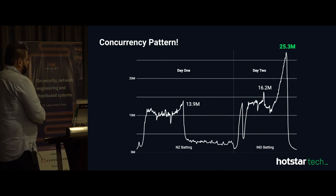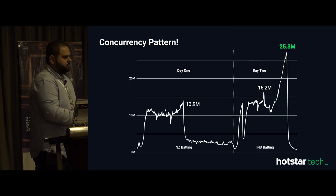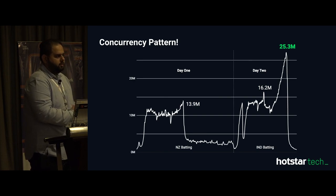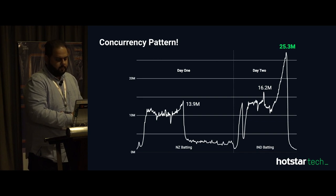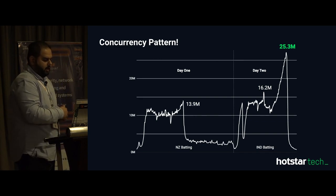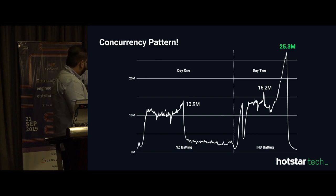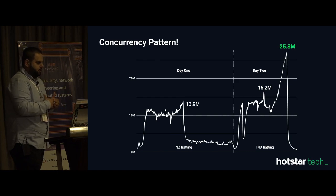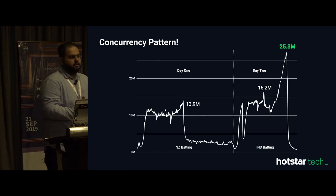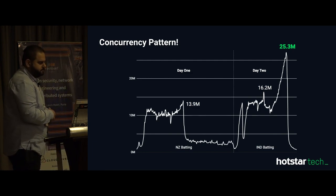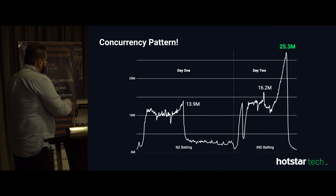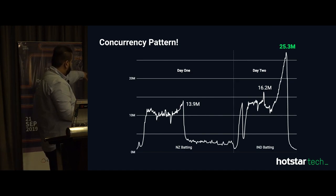This particular match was spread across 2 days because it was rain-affected. As you can see, during New Zealand's batting their peak was around 13.9 million. The dips you see in between — if you are a cricket follower — those are drinks breaks which happen at the 16th over and the 30th over, and most of the time concurrency was above 10 million.